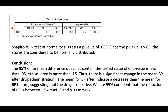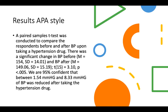This is how you write the results in APA style. A paired sample T-test was conducted to compare the respondents' BP before and after taking a hypertension drug. There was a significant change in BP — you write the mean and standard deviation for before and after, then T(DF) = 3.10, p < 0.05. We are 95% confident that between 1.54 mmHg and 8.33 mmHg of BP was reduced. You don't need to copy word for word — use your own words.